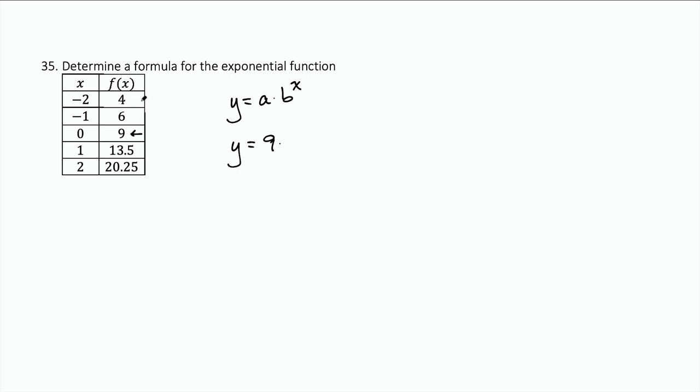And then b is the common ratio. What are we multiplying by each time here? Well, to get that, we can just take a number and divide it by the term before it.